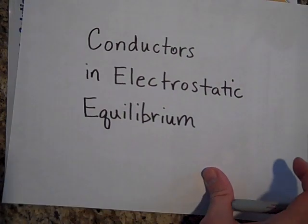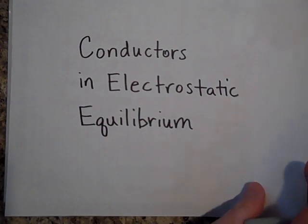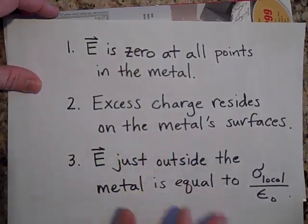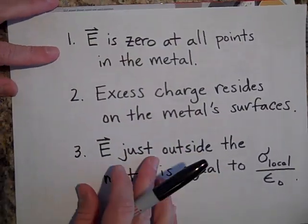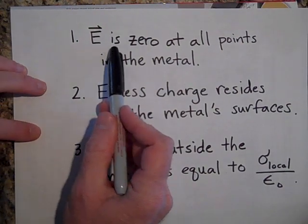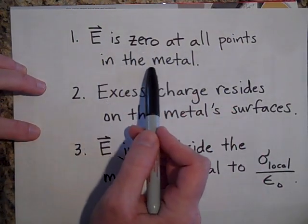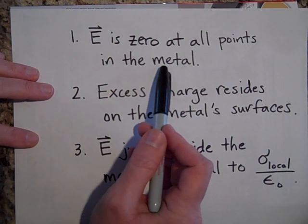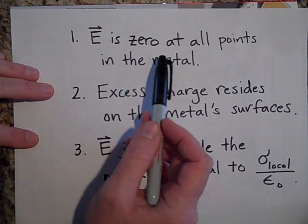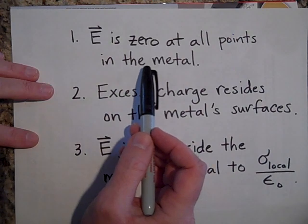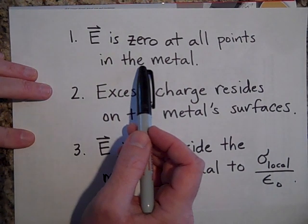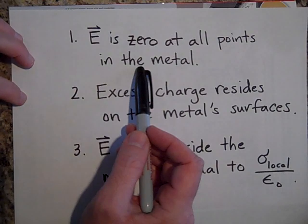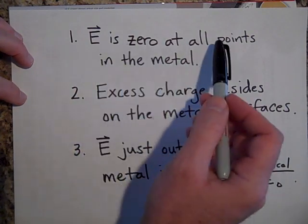There are six things I want you to know about conductors in that situation. Number one: the electric field is zero at all points inside the metal. We've gone over that with Gauss's law. There is no electric field inside the metal — if there was, the charges would move. The fact that the charges aren't moving tells you there's no field in there.